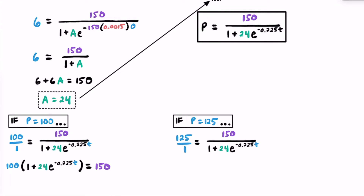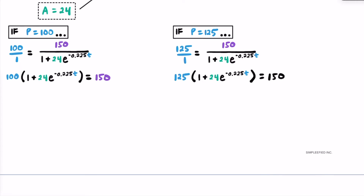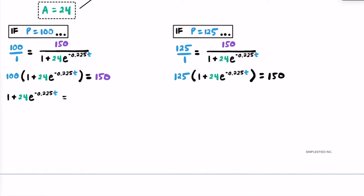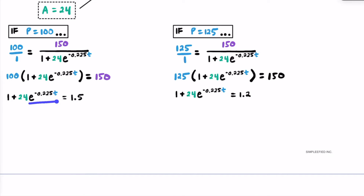For the scenario when the population is 125, we use cross products similarly, getting 125 times the quantity 1 plus 24e to the negative 0.225t on one side, and 150 on the other. Now for the equation on the left (p=100), we divide both sides by 100, giving 1.5 on the right. For the equation on the right (p=125), dividing both sides by 125 gives 1.2. Then we subtract 1 from both sides of each equation, and divide both sides by 24 to isolate e to the negative 0.225t.